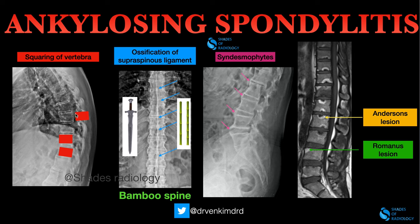You can see the box which I have given adjacent to the vertebra, so that you understand what exactly is happening here. You don't see that concavity of the vertebral end plates. You see the squaring — the straightening of the vertebral end plates — which gives the squaring of the vertebra appearance.